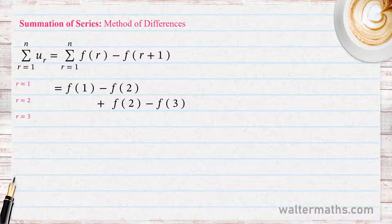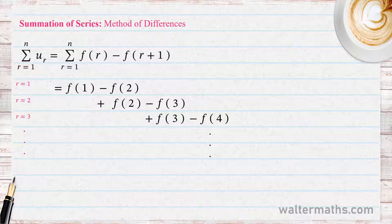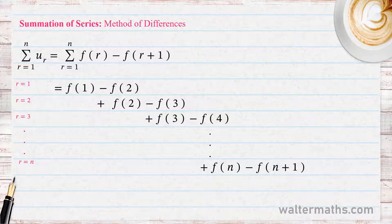For R equals 3, we get F(3) minus F(4), and so on. The series continues until we reach the last term when R equals N, which gives F(N) minus F(N+1).